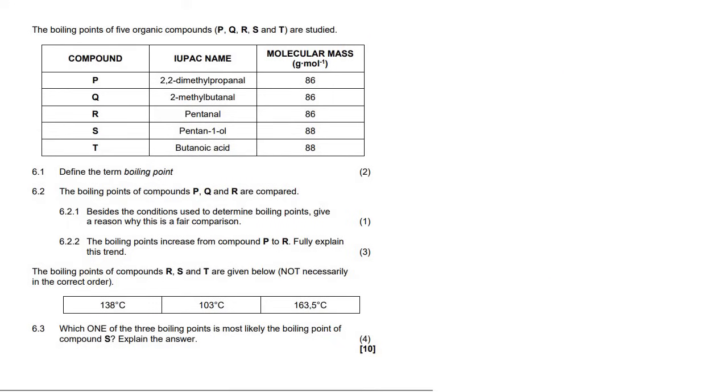For 6.2.1, they tell us that P, Q, and R are being compared, their boiling points. It says, besides the conditions used, give a reason why this is a fair comparison. Well, there's a couple of different answers you could say here. You could say that all of the masses are the same. So we could say that the molecular mass is the same.